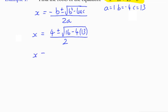Minus 4 times a which is 1 times 13 over two lots of a which is 2. So we can simplify the expression under the square root sign: 16 minus 4 times 13. 4 times 13 is 26, is 52, and 16 minus 52 is negative 36.